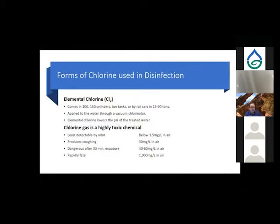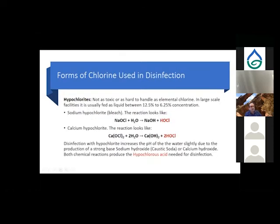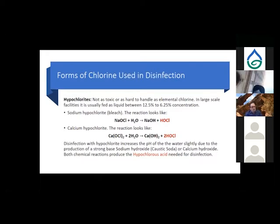The more common form of chlorine used today is hypochlorites, which are not as toxic or difficult to handle as elemental chlorine. In large-scale facilities they're usually fed as a liquid at concentrations between 6.5% and 12.5%, depending on the facility. The two most common types are sodium hypochlorite — your everyday bleach — and calcium hypochlorite.